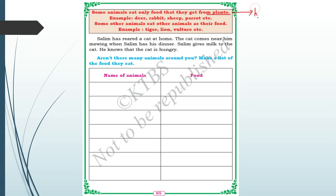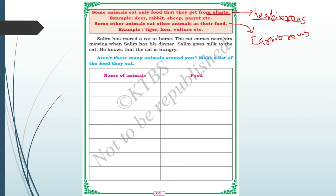Some animals eat only food from plants — those are called herbivores. Animals that get food from other animals are called carnivores. For example, tiger, lion, and vulture eat other animals, so they are carnivores. Animals like deer, rabbit, sheep, and parrot eat plants and grass, so they are called herbivores.